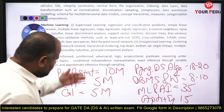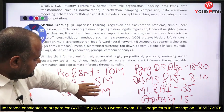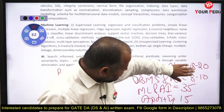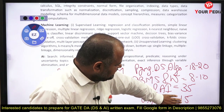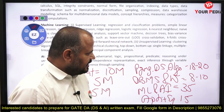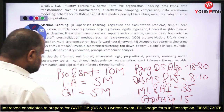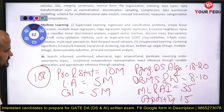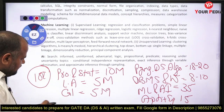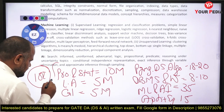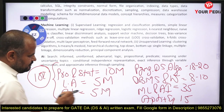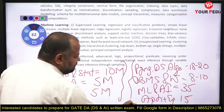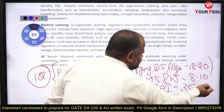To summarize the probable weightage: probability and stats — 10 marks; linear algebra — 5 marks; calculus and optimization — 5 marks; programming, data structures, and algorithms — 18 to 20 marks; DBMS and warehousing — 8 to 10 marks; ML and AI — 35 marks; aptitude and English — 15 marks. This totals approximately 100 marks.